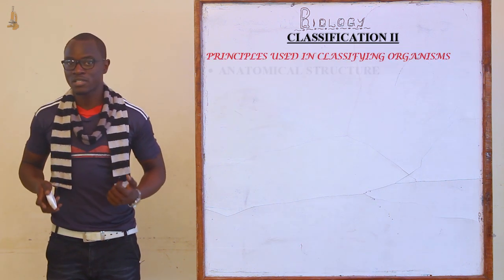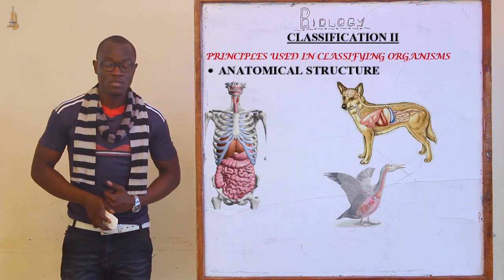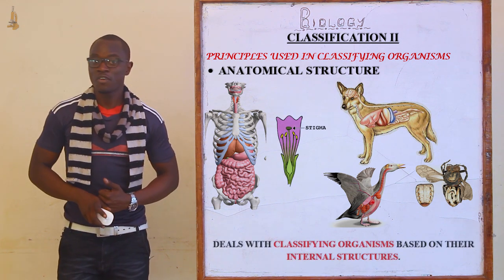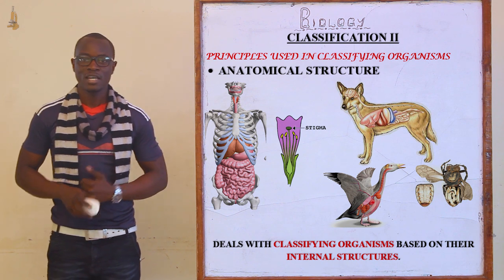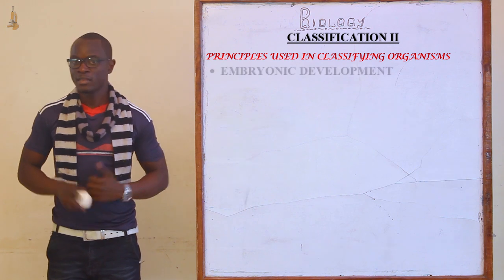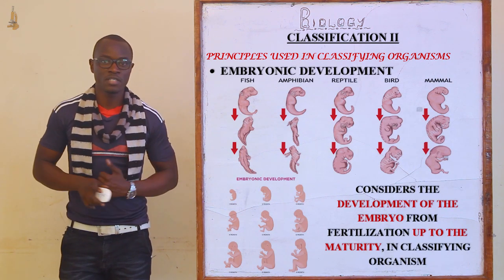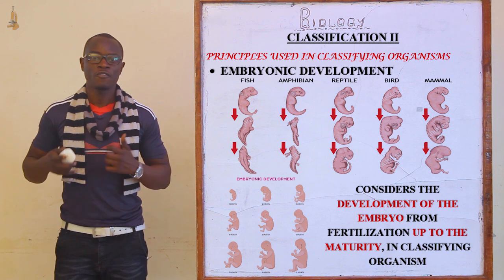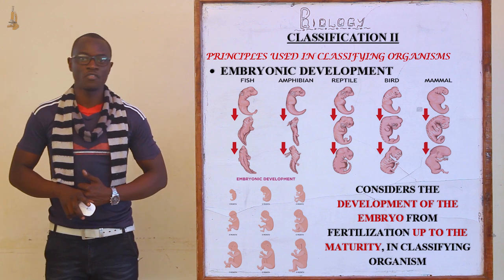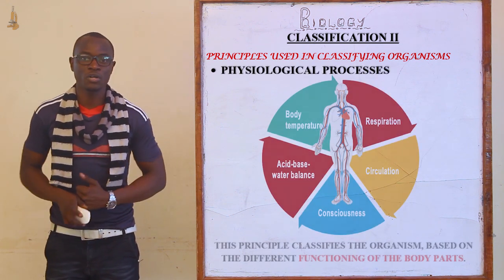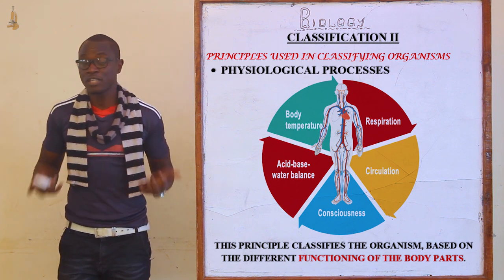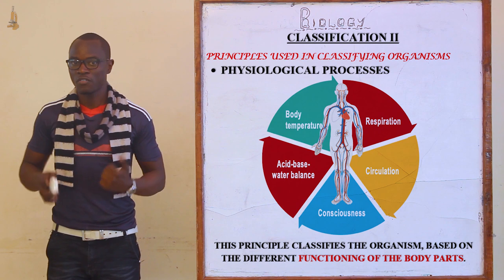What are the principles used in classifying organisms? The first principle is anatomical structure, which mainly considers the internal structures of different organisms. The next is embryonic development, which considers the development of the embryo from fertilization through later stages. Then we have physiological processes, which considers the different functions of the various body parts of the organism.